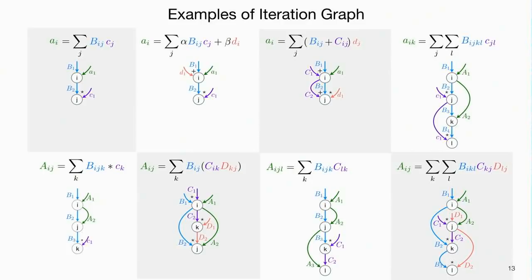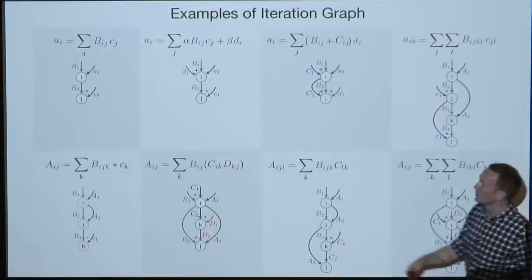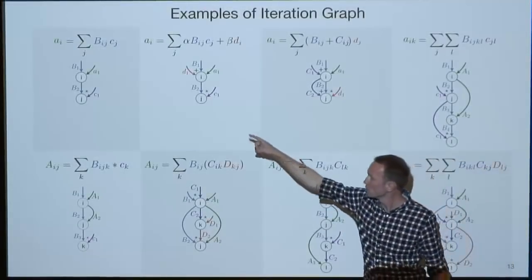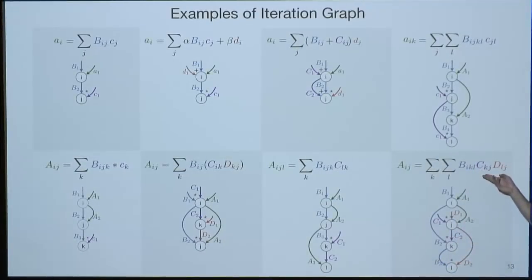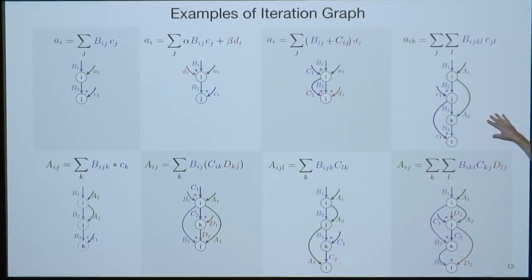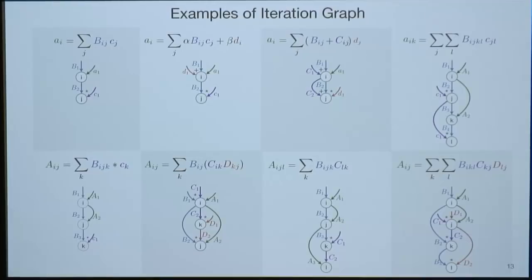We can generate iteration graphs for any expression — it's a general representation. Examples range from matrix-vector multiplication to the KRP used for tensor factorization. A blocked matrix-vector multiplication becomes a four-tensor operation in our representation, and a doubly blocked matrix becomes a six-tensor operation.